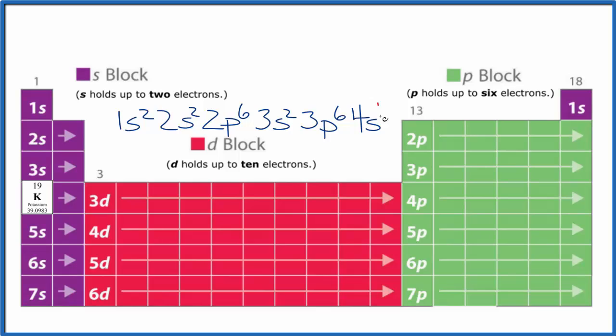And then 3p⁶, we go to 4s¹. And we've used all of these 19 electrons, and you can see we ended up here on potassium. That kind of makes sense. So now we have the electron configuration.